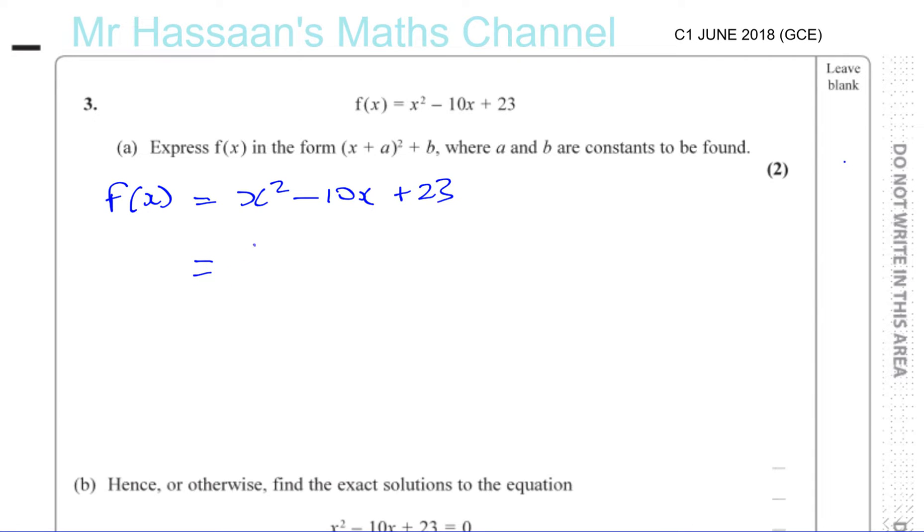So we can go straight away and start completing the square. To complete the square, you have to have a bracket which is squared. You write x, and you write minus if there's a minus, and you write half of just the coefficient, which is 5. So x minus 5 squared. Now if I was to square this bracket, I'm going to get x squared minus 10x plus 25. Well, I don't want the plus 25.